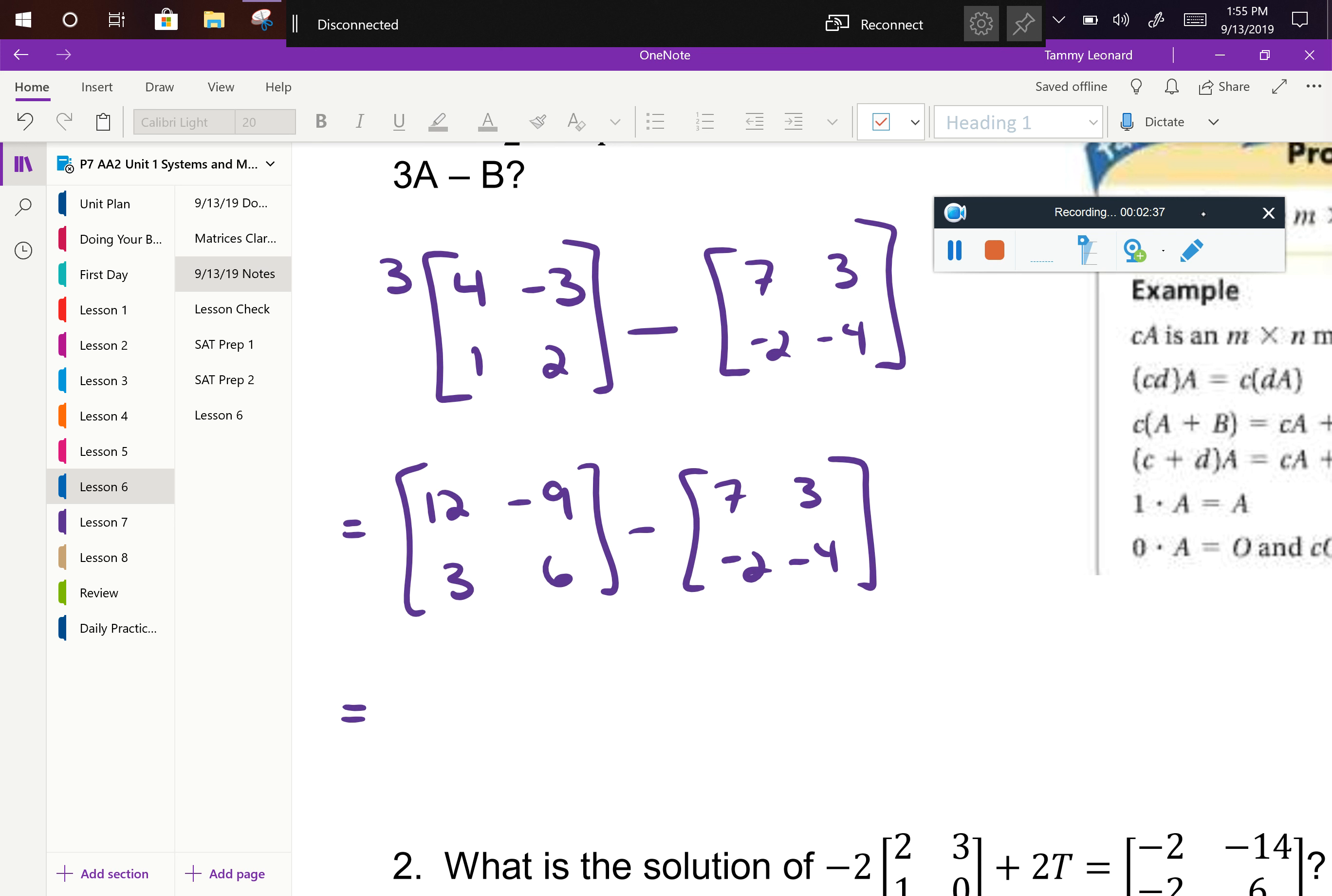So what do we get for our final answer? Will? 5, negative 12, 5, 10. All right, that is correct. Any questions on scalar multiplication or substituting and simplifying? We're good? All right.